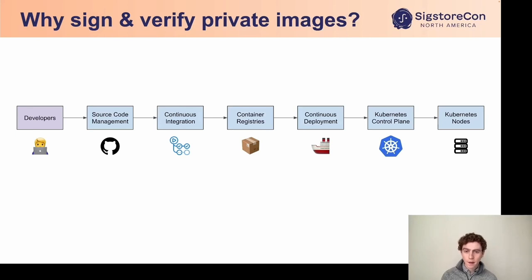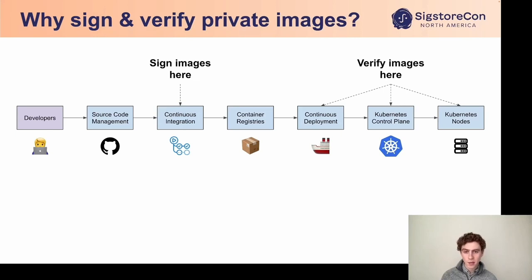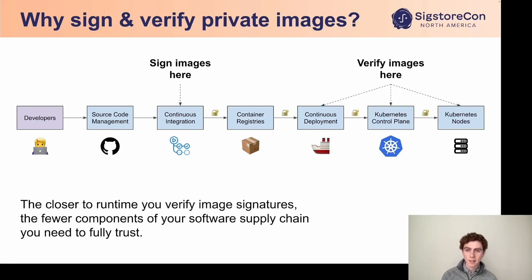For example, if you're signing container images, you're substantially protected against compromise of the container registry. Ideally, you sign images in CI as soon as possible after they're created, using keys only available to CI. This signature then represents an attestation of provenance, authenticating that the image came from CI. Then, every time the image is used or referenced later on in the software supply chain, verifying the image signature allows you to reduce trust in each of the components in between. The closer to runtime you verify image signatures, the fewer components of your software supply chain you need to fully trust.